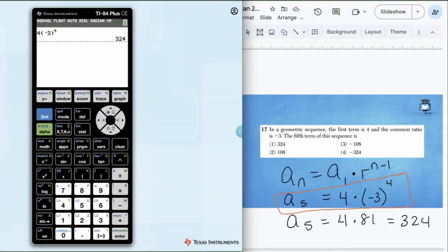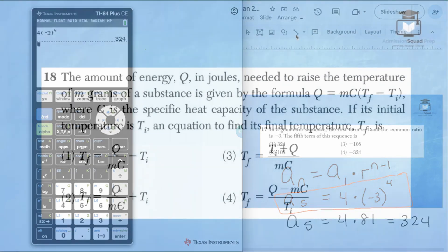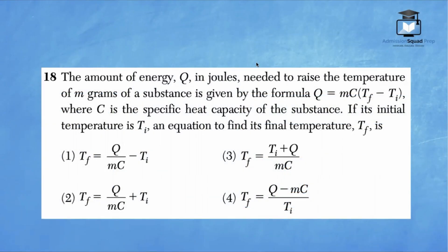Let's head over to question number 18. The amount of energy Q in joules needed to raise the temperature of m grams of a substance is given by the formula Q equals MC, open parentheses, T sub F minus T sub I, close parentheses, where C is the specific heat capacity of the substance. If its initial temperature is T sub I, an equation to find its final temperature T sub F is.